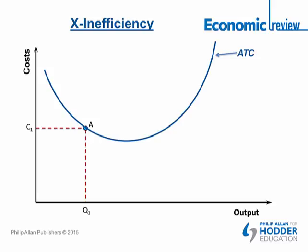What's true for point A is true for any point on this line. Let's take point B, producing Q2. Reading off from point B, we get C2 on the Y-axis. C2 is the cheapest possible method of producing Q2. What's true for point A or point B is true for any point along that line.